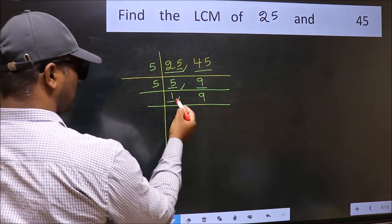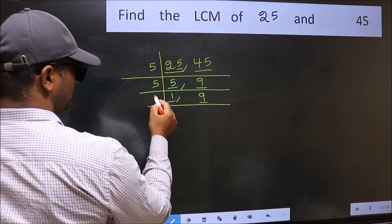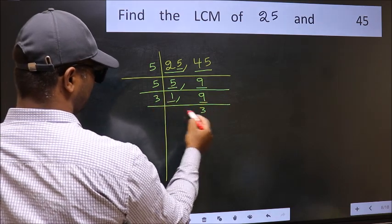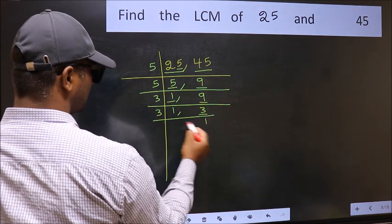Now, we got 1 here. So, focus on the next number, 9. 9 is 3 times 3. Now, here we have 3. 3 is a prime number, so 3 times 1 is 3.